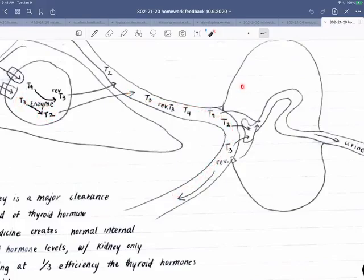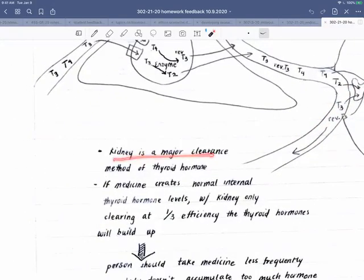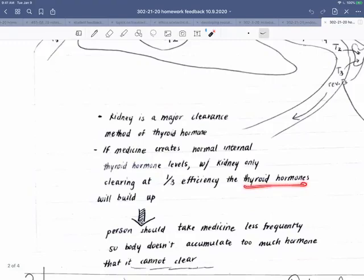And so if we have one-third of the fluid entering the kidney, that means that instead of the normal amount of T3 being excreted, that two-thirds of that, what would have been excreted, is actually being retained. So the kidney is a major clearance method for thyroid hormone. That means that if the kidney is only clearing at one-third efficiency, that T3 is going to build up.